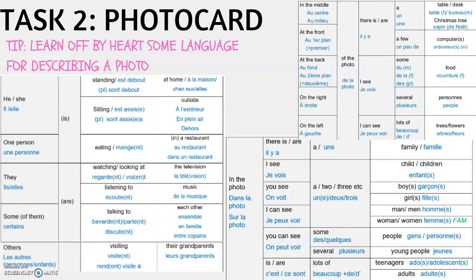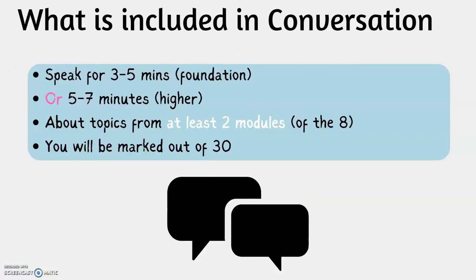The tables cover people in the photo, what they are doing, and positions within the photo. Finally, the general conversation. For foundation, you speak for 3 to 5 minutes. For higher, you speak for 5 to 7 minutes. It's about a topic from at least 2 modules of the 8, so one of the 4 themes. And you'll be marked out of 30.